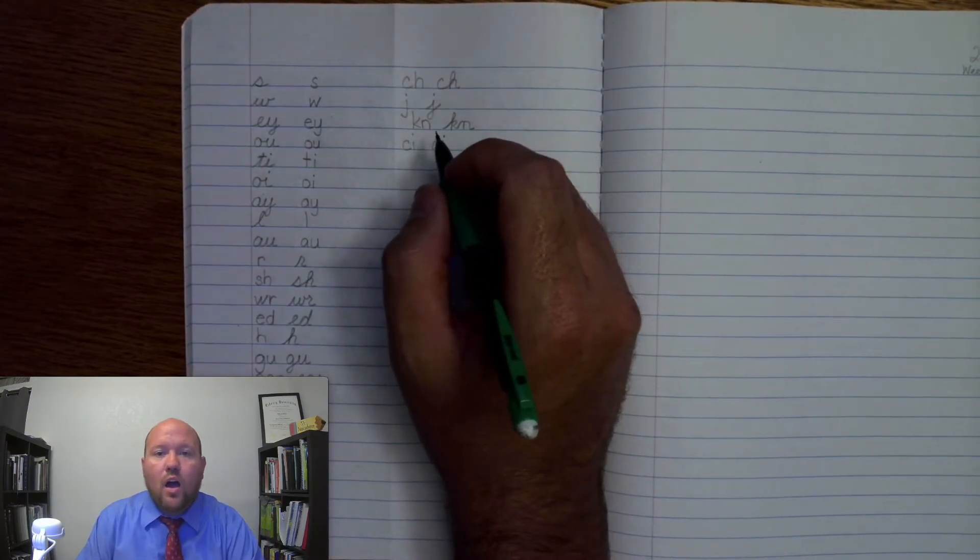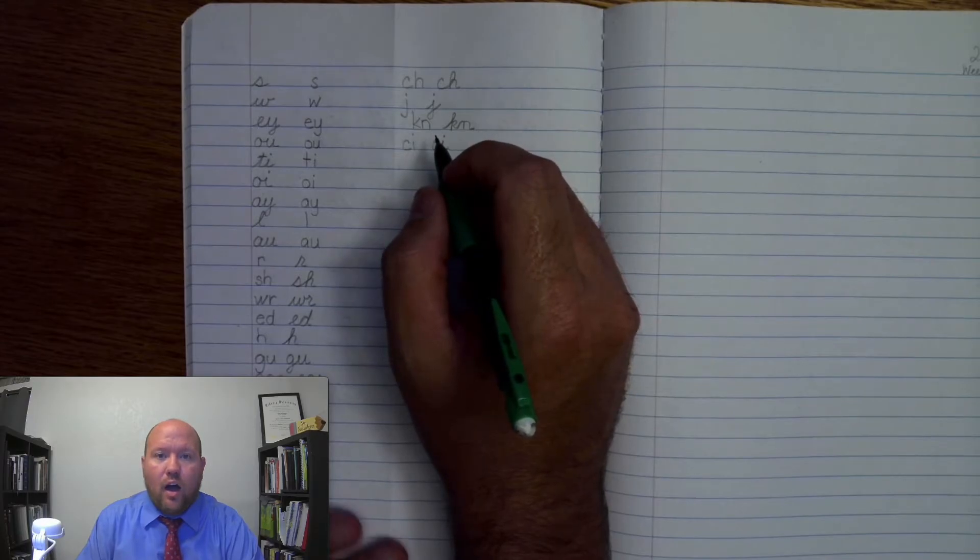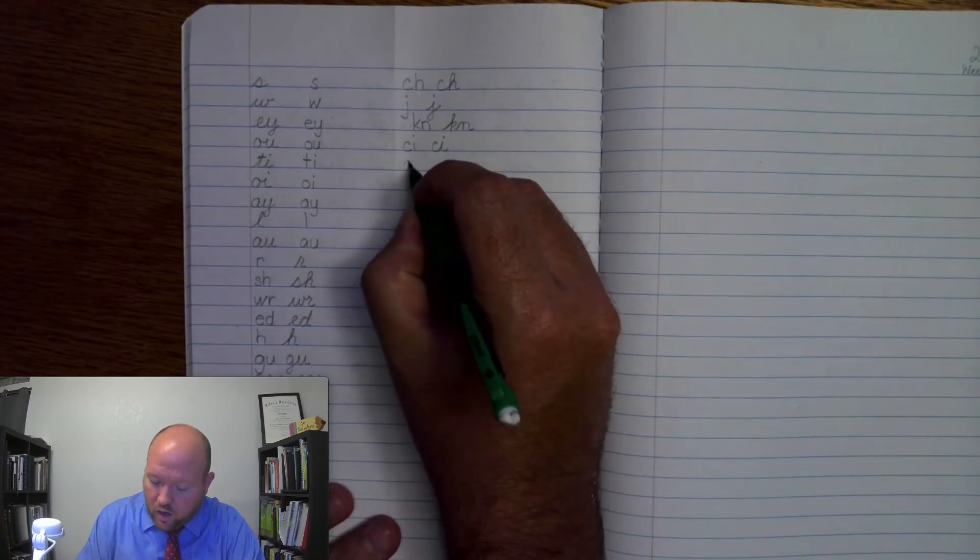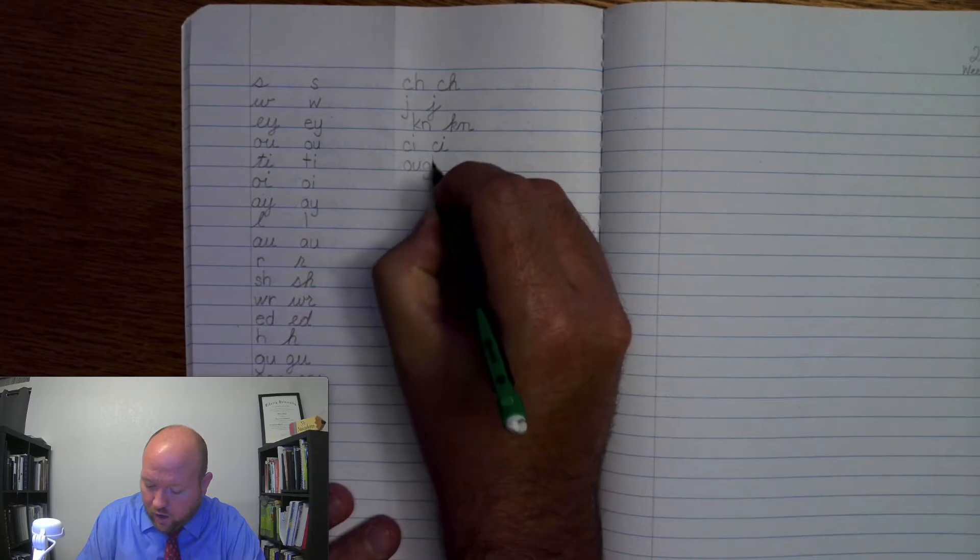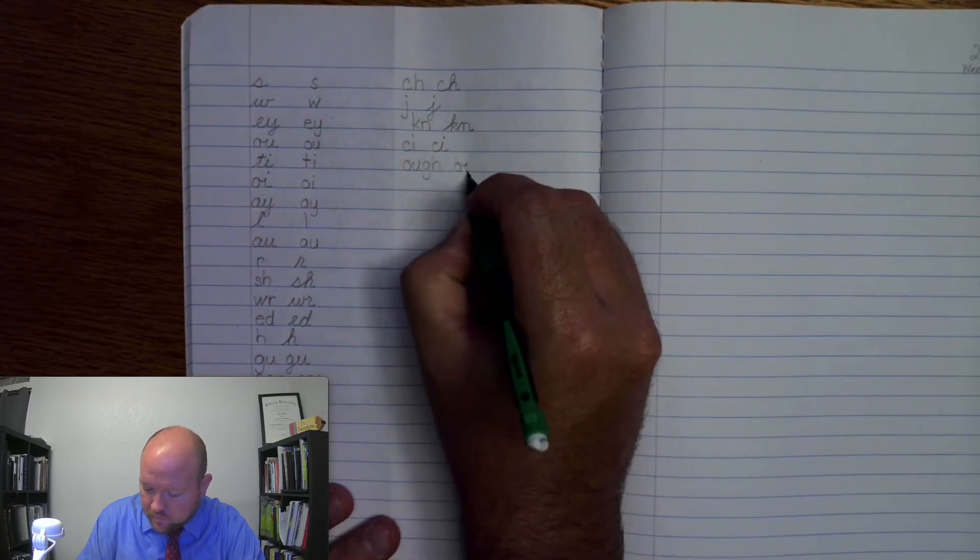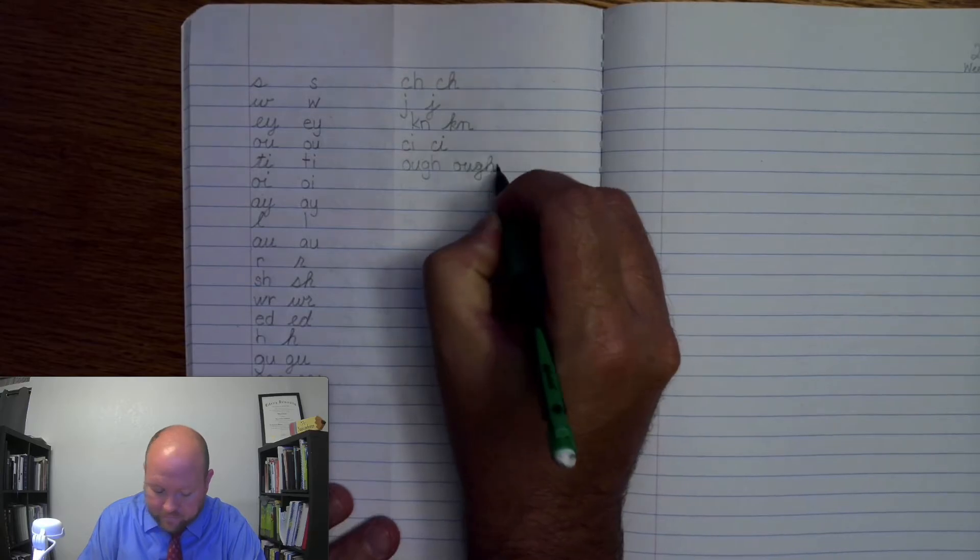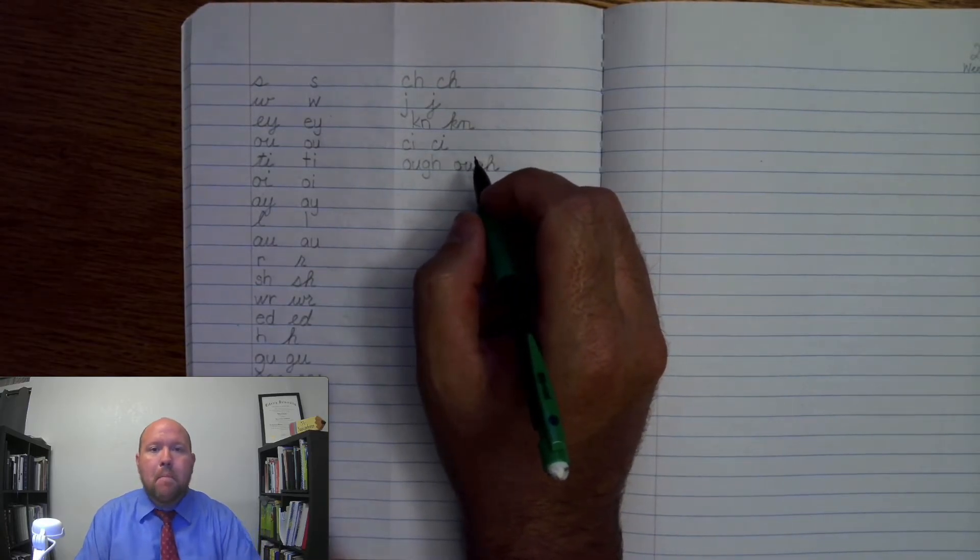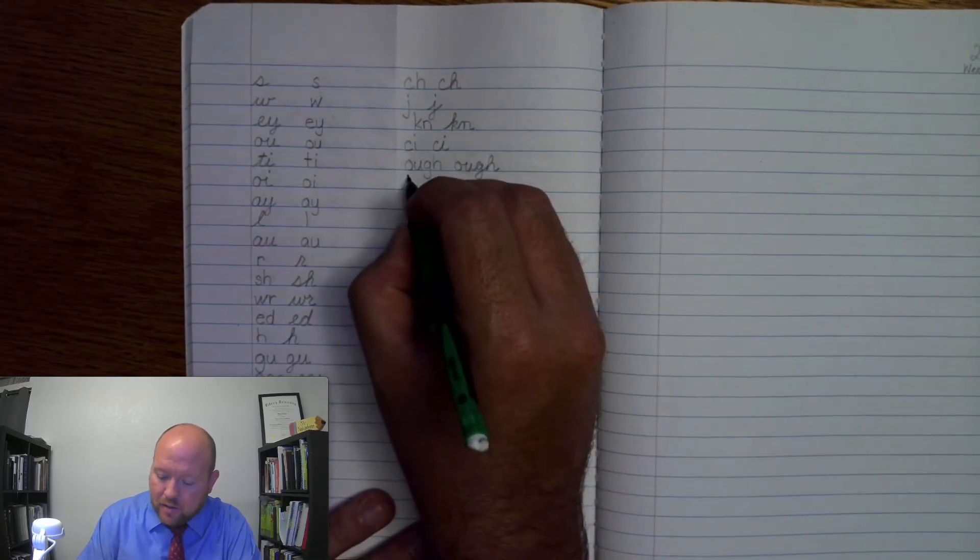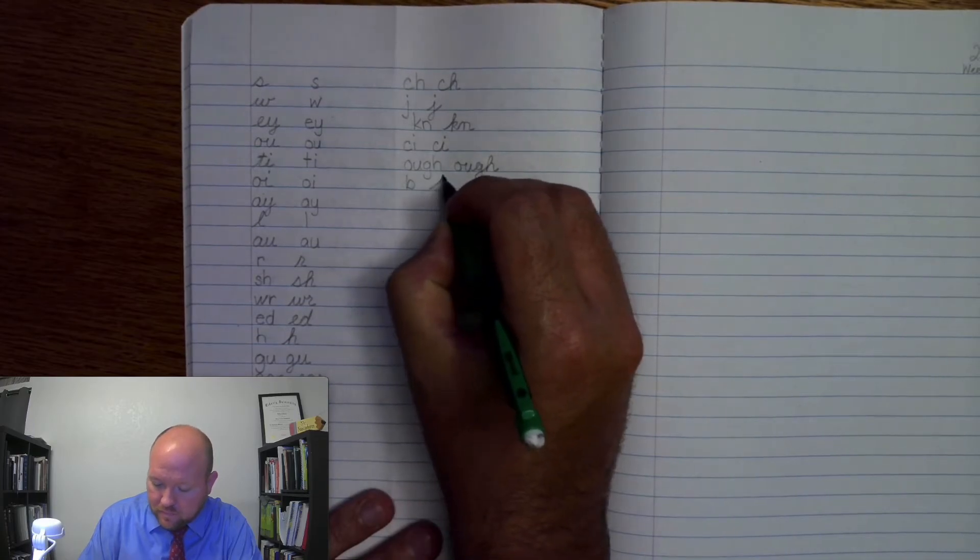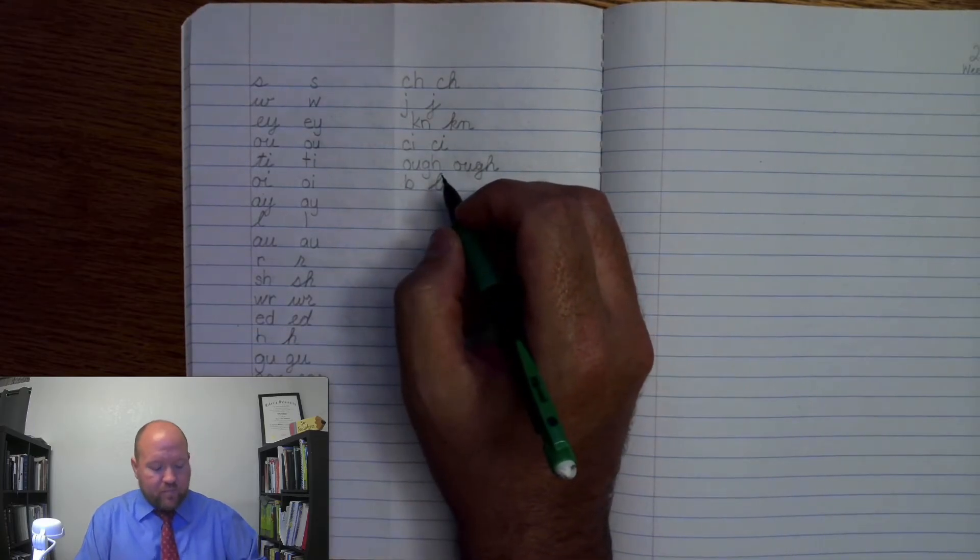Next one. N, two letters beginning. N, two letters beginning. Next one. Sh, short. Sh, short. Next one. O, oo, uff, off, aw, ow. O, oo, uff, aw, aw, ow.